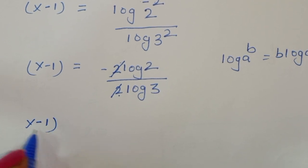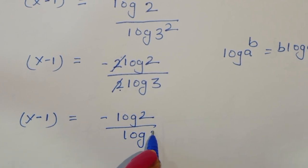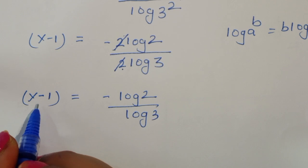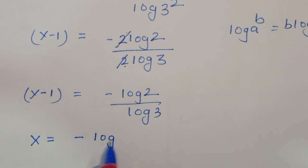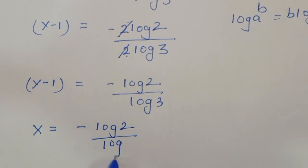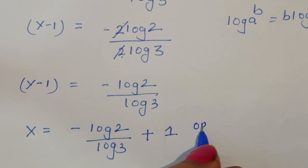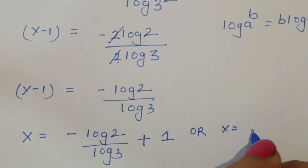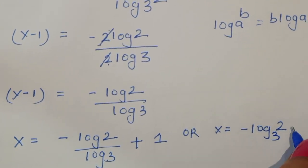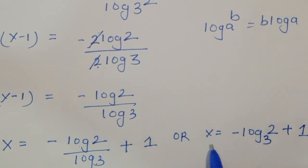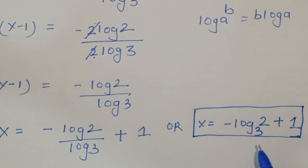After cancelling, x minus 1 equals minus log 2 divided by log 3. So x equals minus log 2 divided by log 3 plus 1, which we can write as x equals minus log base 3 of 2 plus 1. This is the value of x. Now let's verify if this is correct.